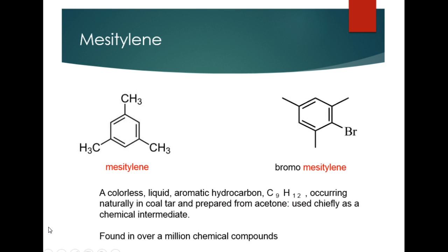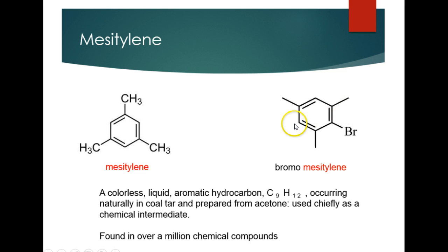Our next special benzene is mesitylene, which has three methyl groups on every other carbon around the benzene ring, as shown here. This is the most commonly found benzene in different chemical compounds — it's found in over a million different chemical compounds. In an example that also has a bromo group off the mesitylene, we don't need a number because no matter what spot we place the bromo, it has the same numbering sequence. So we simply call it bromomesitylene.